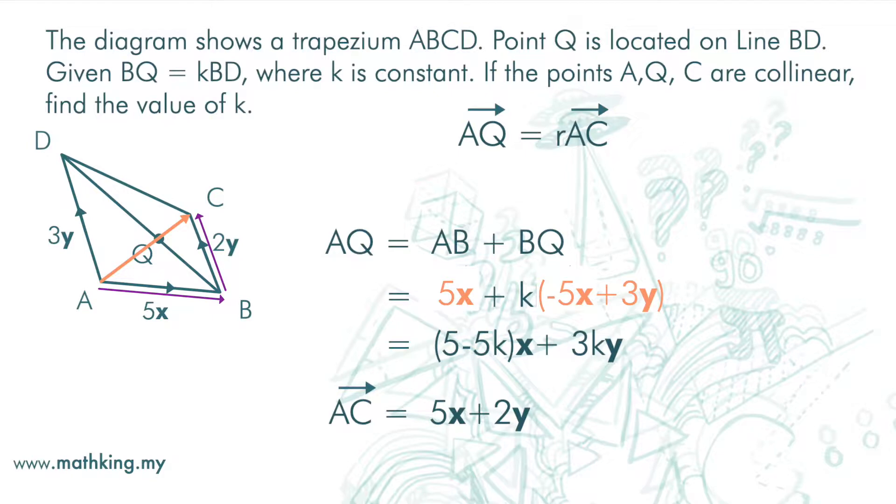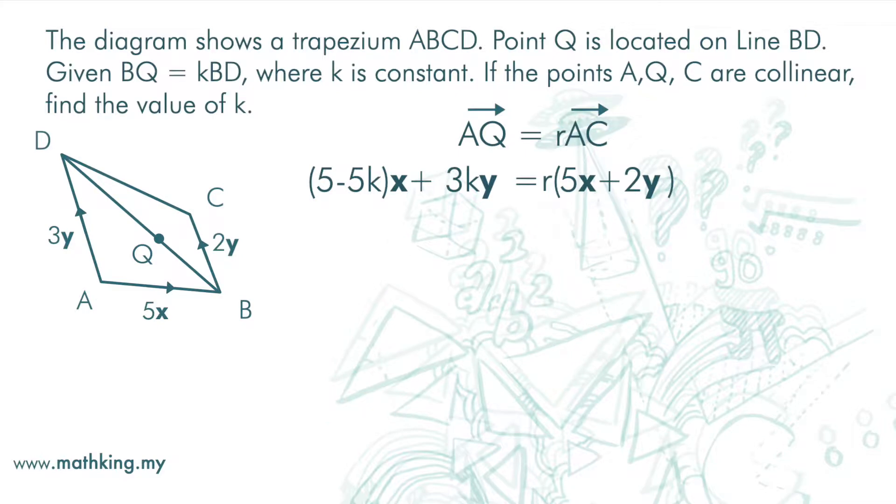Vector AC is AB plus BC, and this is 5X plus 2Y. Now let's get the first equation here. Comparing both sides, we find that 5 minus 5K equals 5R, and 3K equals 2R.